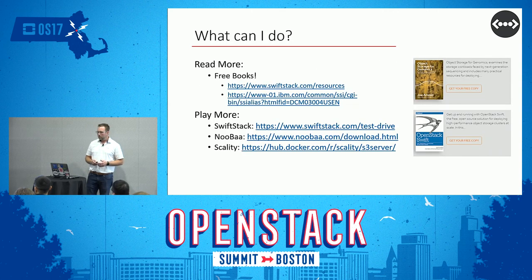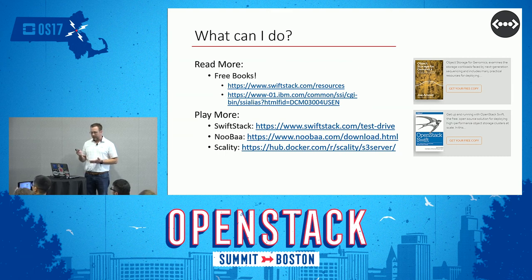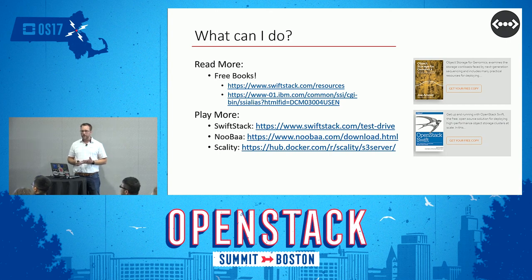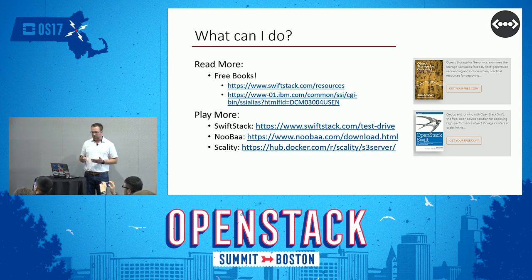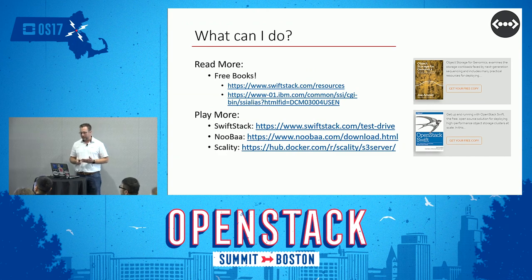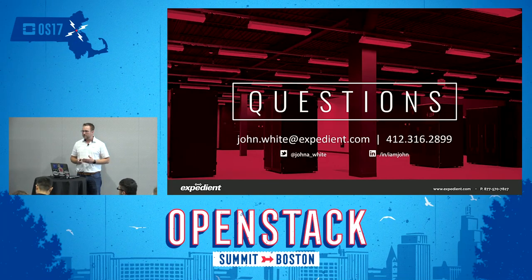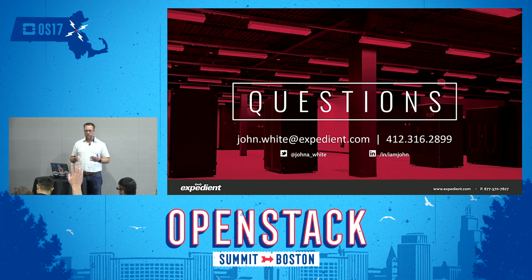There are a lot of free books out there — SwiftStack has some on their site you can download, and I've linked to a good IBM book as well. Play with it: there are community editions of several products. SwiftStack has one, Nuba has one, and Scality has one that if you're using Docker today you can pull straight from Docker Hub and get running immediately. That's all for my lightning talk — appreciate the time. Feel free to hit me up on Twitter, LinkedIn, or email with any questions. Thank you.